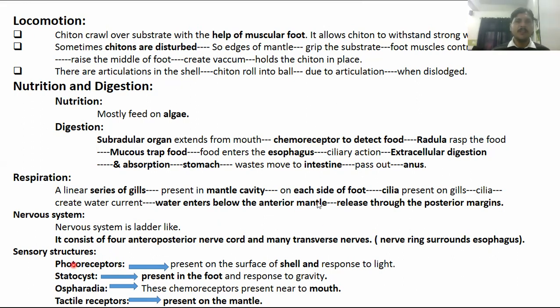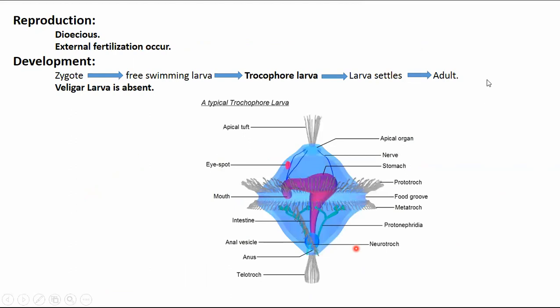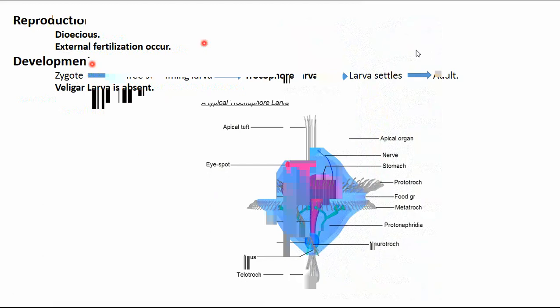In the foot-oriented group, there are more than 300 organisms, and gills are absent in them. Gas exchange occurs through mental foldings. They are dioecious, and within them there are also trochophore larvae and veliger larvae present. In the first group, Polyplacophora, only trochophore larvae are present. The next class of Phylum Mollusca is Class Monoplacophora.